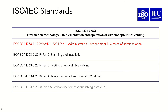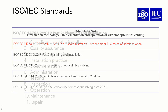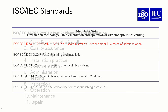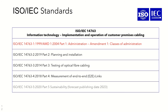ISO/IEC 14763 is another series of standards covering the implementation and operation of customer premises cabling. Currently there are three published parts covering planning and installation, testing of optical fiber cabling, and measurement of end-to-end links. Part 1 was replaced by Part 2 in 2012, and the latest version of Part 2, issued in 2019, covers the installation and operation of telecommunications cabling infrastructure including pathways, spaces, and telecommunications bonds. In detail, this covers specification of installation, quality assurance, planning, installation practice, documentation, administration, testing, inspection, operation, maintenance, and repair of a cabling infrastructure.